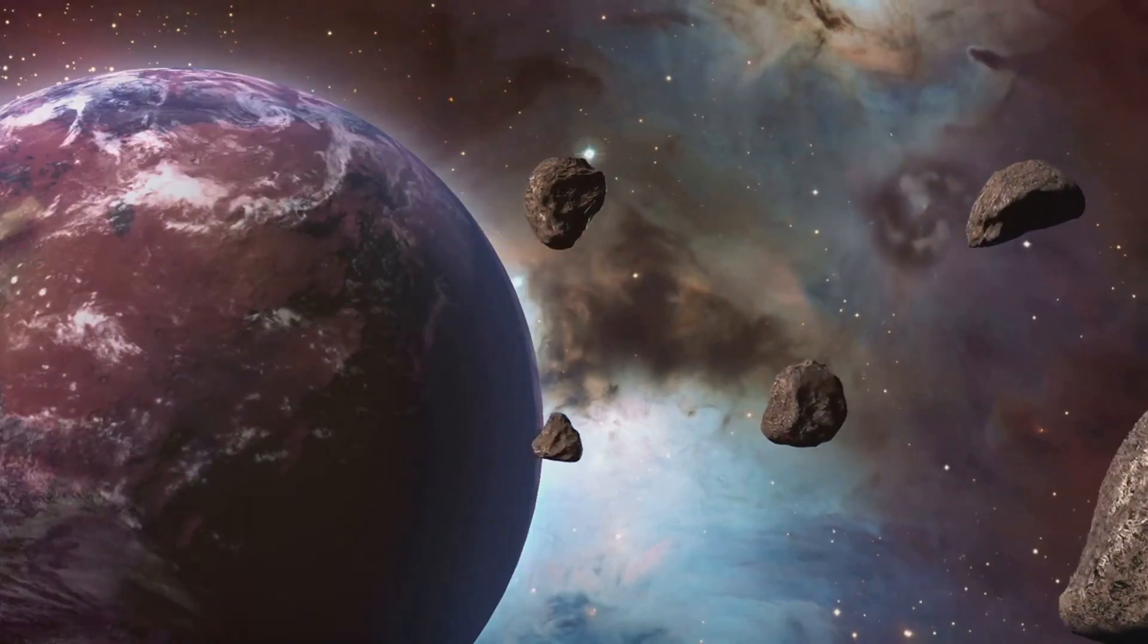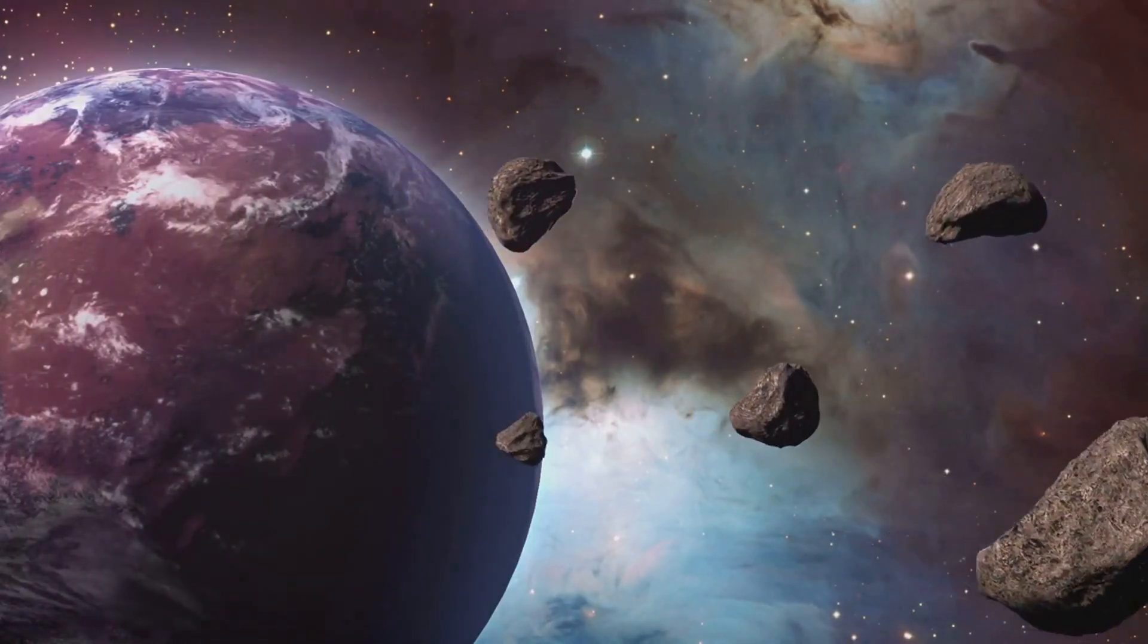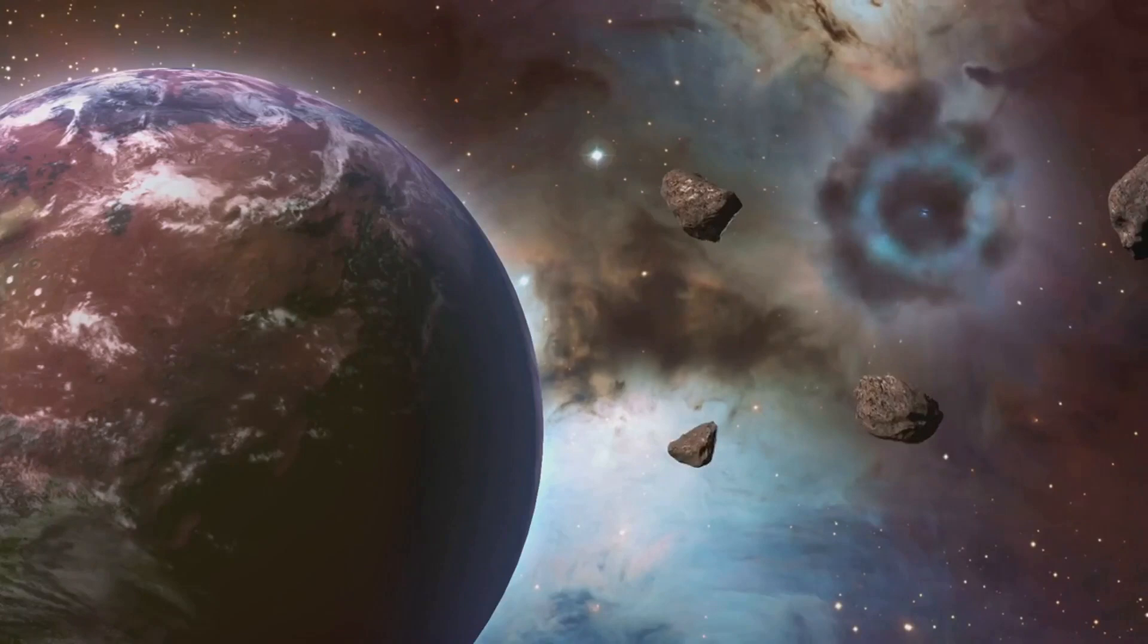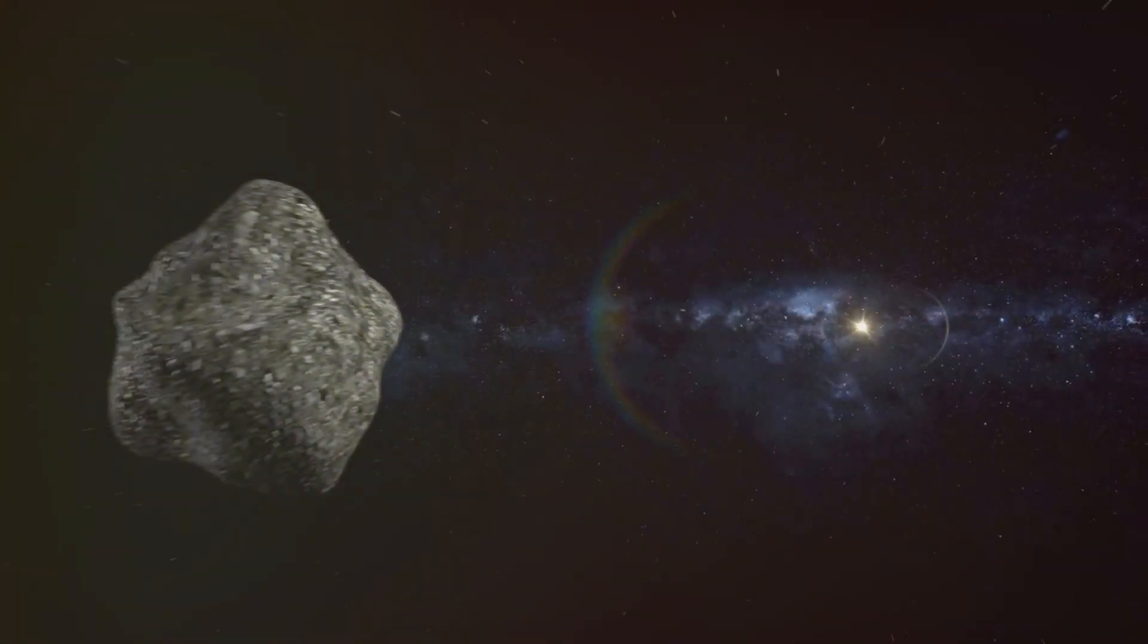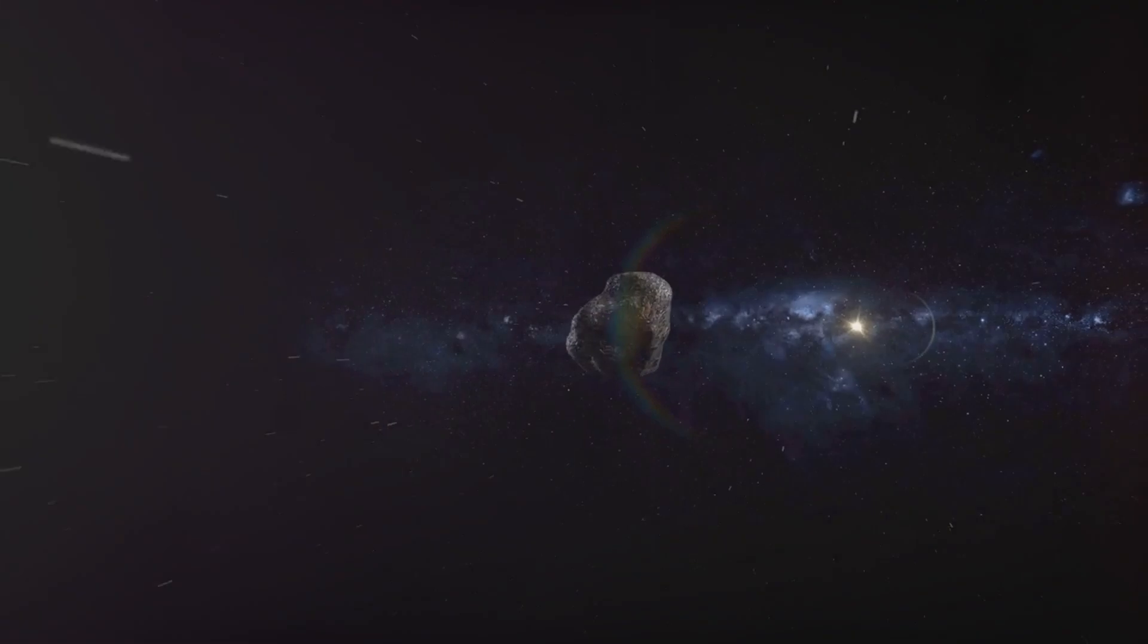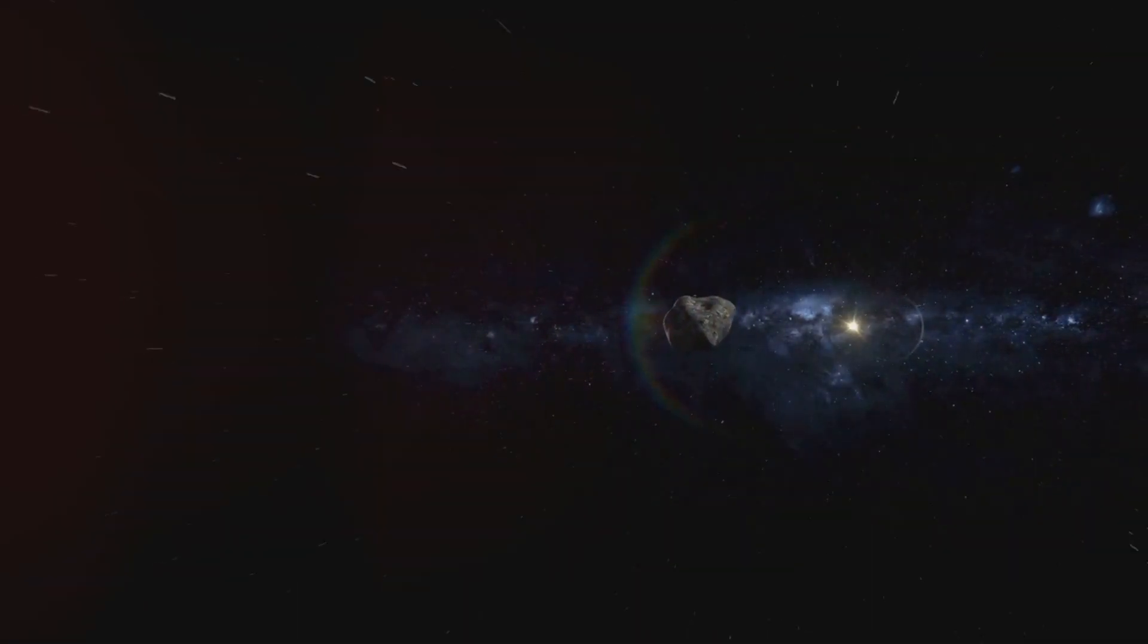It's like an impromptu cosmic dance. Our new visitor, dubbed 2024 Pt-5, hails from the Arjuna asteroid belt. Discovered on August 7th by the Atlas system, this rock is about 33 feet long, tiny but mighty in space terms.